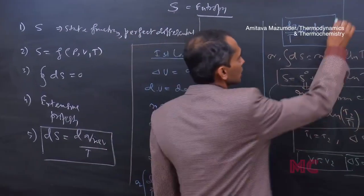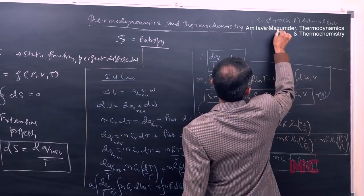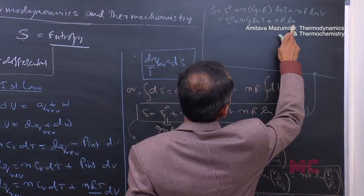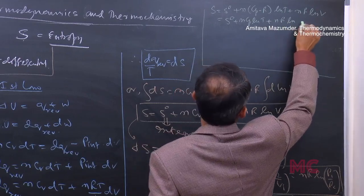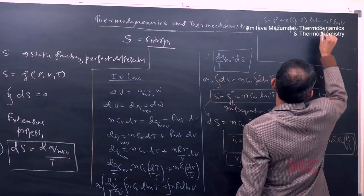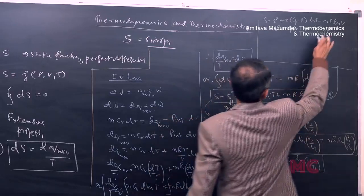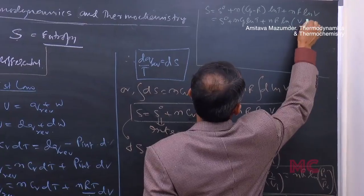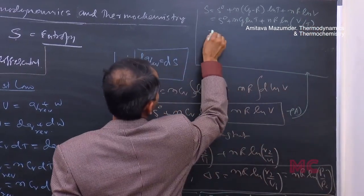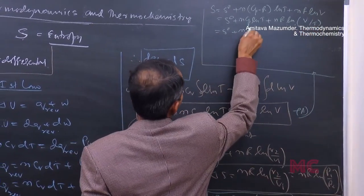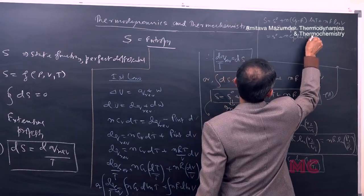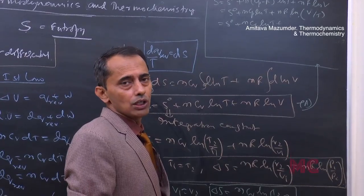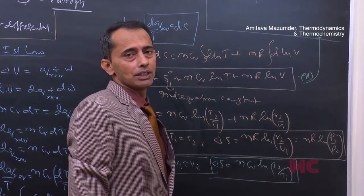We can then write S equals S₀ plus nCₚ ln(T) plus nR ln(V/T). Using the ideal gas law PV equals nRT, we know V/T equals nR/P, so we substitute accordingly.